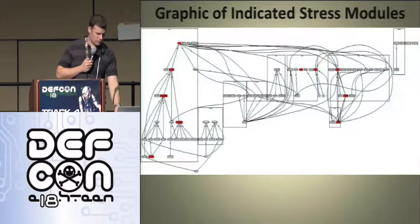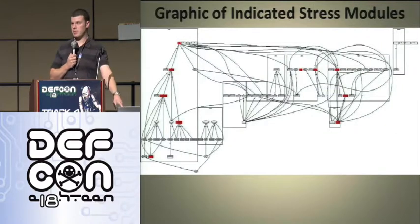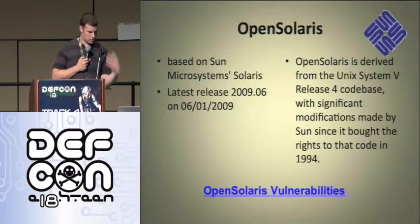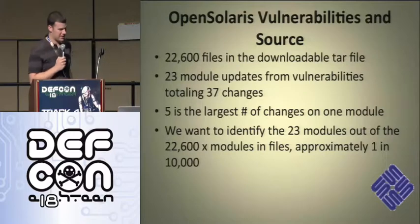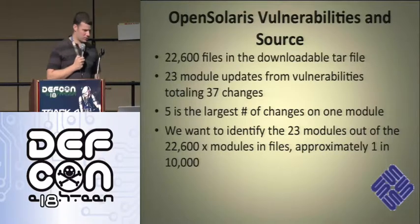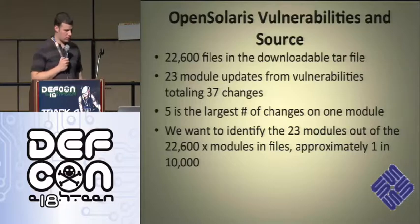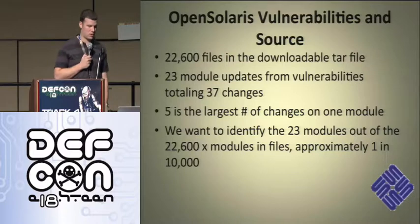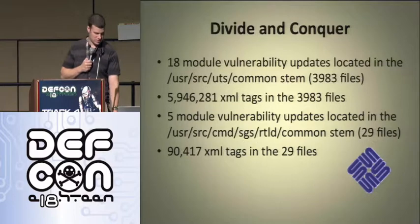There's a graph showing some of the actual output — it shows which modules are likely to be vulnerability-prone. For OpenSolaris, we had 22,600 files, 23 module updates from vulnerabilities totaling 37 changes, with the largest number of changes on one module being five. So we wanted to identify 23 modules out of 22,600 — approximately one in 10,000. Pretty tricky.